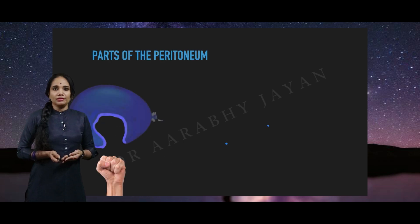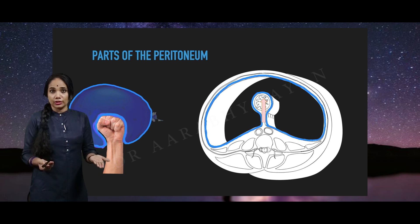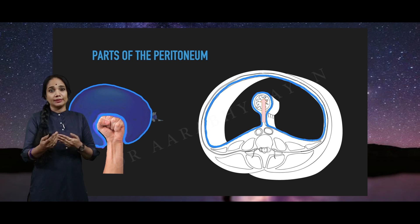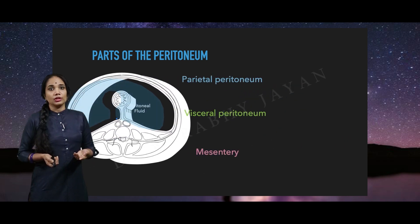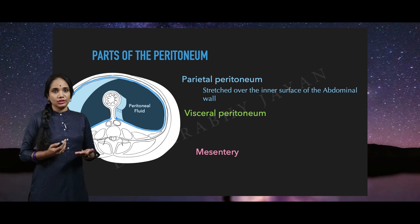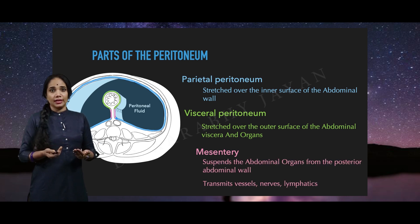What we have already seen is that the peritoneum and its parts can be compared to a fist going into a balloon. That's the same way organs grow from the back of the abdominal wall into the peritoneal cavity, and they take with them a layer of the peritoneum which covers them. So the organ is not actually within the cavity; it is covered and separated from the cavity by a layer of peritoneum called the visceral peritoneum, and the parietal peritoneum coats the inner surface of the abdominal cavity. The mesentery, which is double-layered, allows for vessels, nerves, blood, and lymphatics.